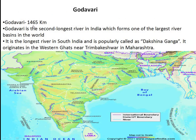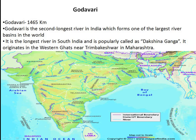Next is Godavari, which is 1465 kilometers. It is the second longest river in India and forms one of the largest river basins in the world. It is the longest river in South India and is properly known as Dakshina Ganga — this is an important MCQ point. It originates in the Western Ghats near Trimbakeshwar in Maharashtra, towards the west side.